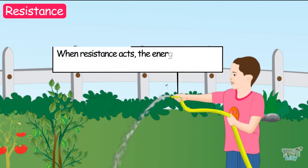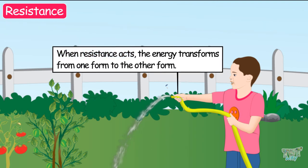So when the resistance acts, the energy transforms from one form to the other form. Now the same thing happens in electric wires. Let's see how.